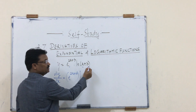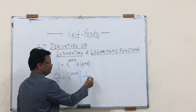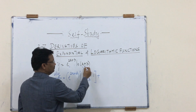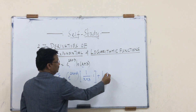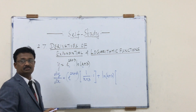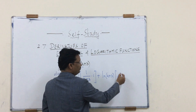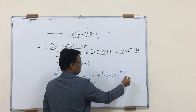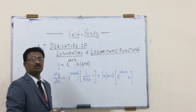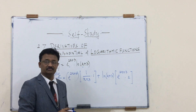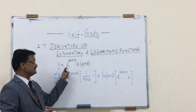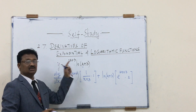Differentiating g = ln(x+3) gives 1/(x+3) times the differentiation of (x+3), which is 1. Then write g = ln(x+3) as it is, and the differentiation of e^(2x+3) is e^(2x+3) times 2, since the differentiation of (2x+3) is 2. This is a good example of a combination of exponential base-e and logarithmic functions.